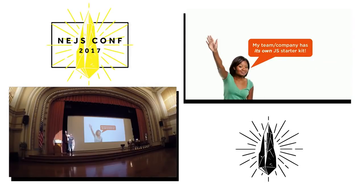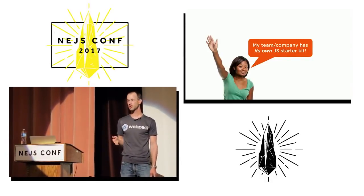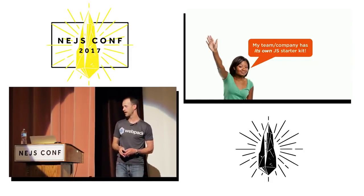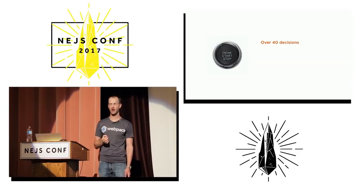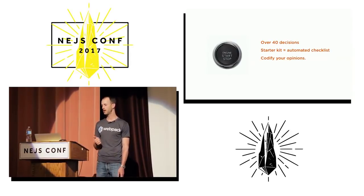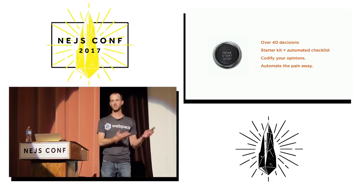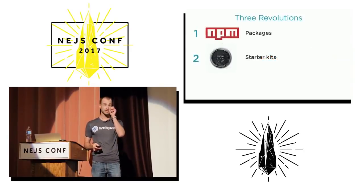That is a very, very small number. So again, look around the room — the future is here, it's just not evenly distributed. I believe this is the future because starting with 'File > New Project' is just too much work. Your team has a large set of opinions — there are over 40 decisions you need to make when you start a new JavaScript project, and a starter kit operates as an automated checklist for your team so you can codify your opinions and automate the fatigue away. My team is not fatigued anymore.